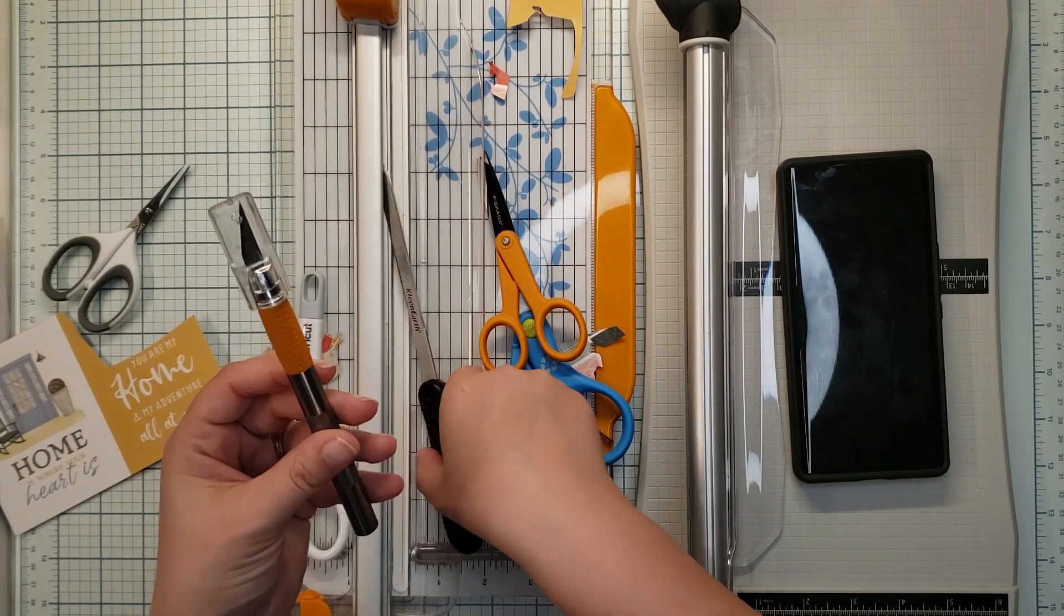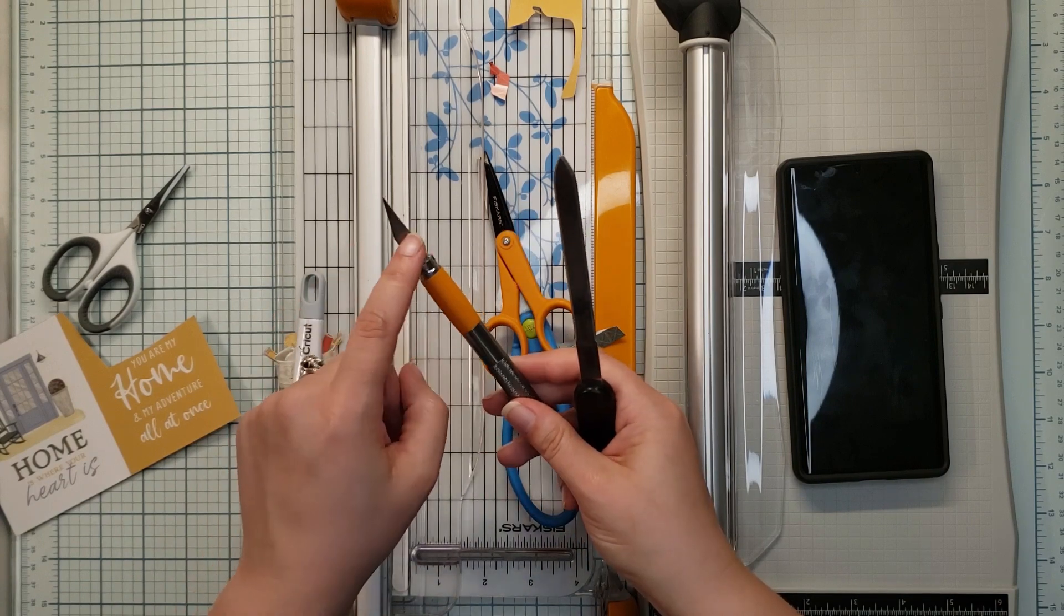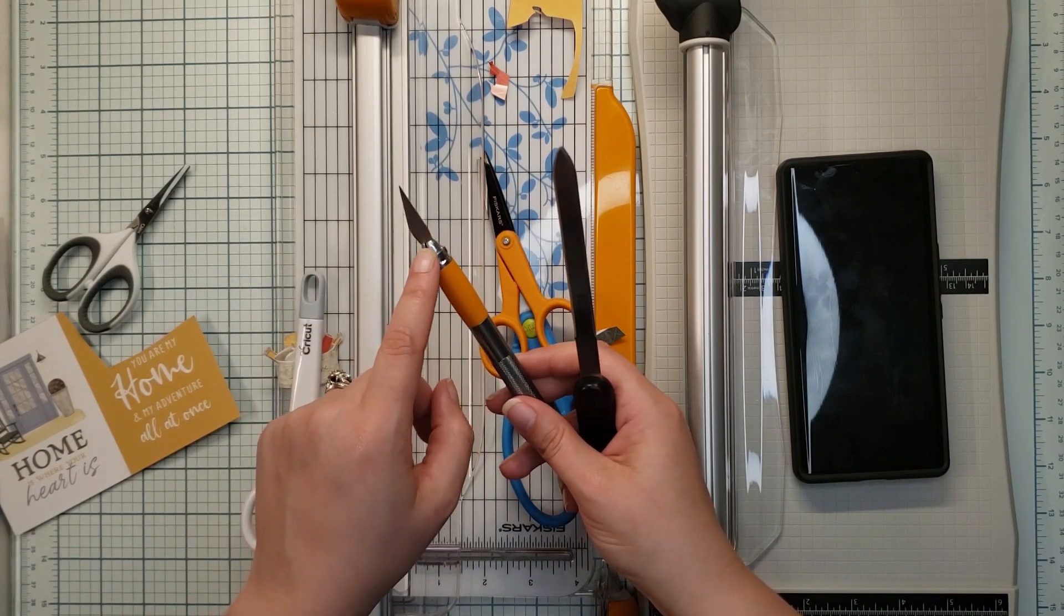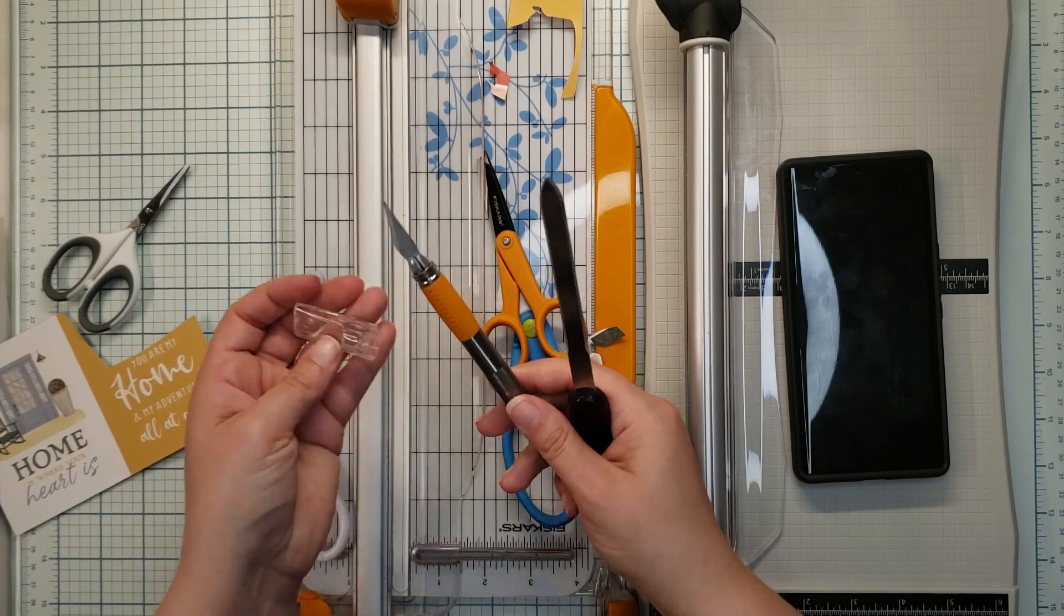So get yourself a pair of scissors and a rotary trimmer. Those are two things.